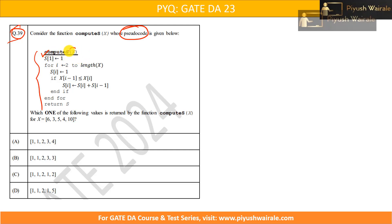Here we have compute(x); x will be taken as the input to this particular function. The question is: which one of the following values is returned by the function compute(x) for x equals to this given input?